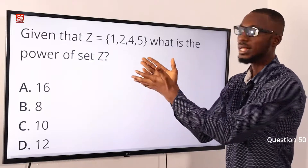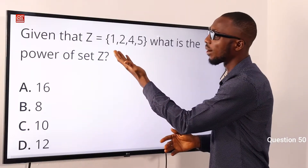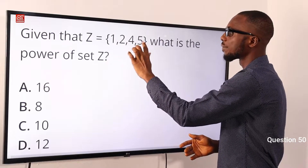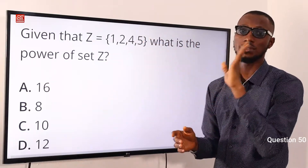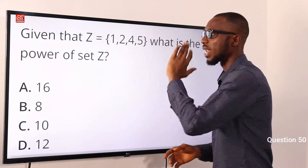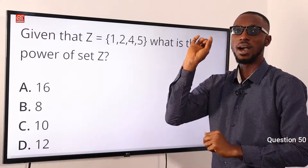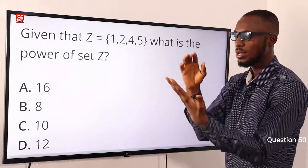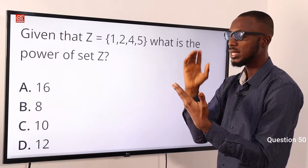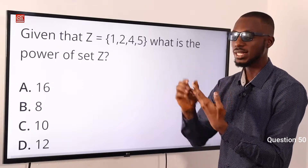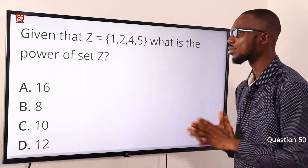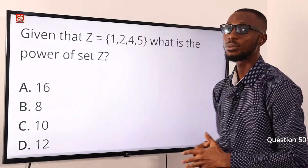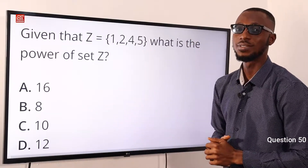It's 2 raised to power N. The number of elements we have is 1, 2, 3, 4 — we have just 4 members. So that is 2 raised to power 4. 2 times 2 is 4, times 2 is 8, times 2 is 16. So 2 raised to power 4 is 16. The power of set Z is 16. Option A is correct.